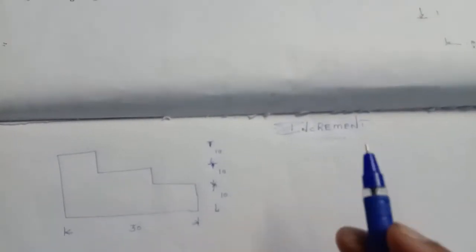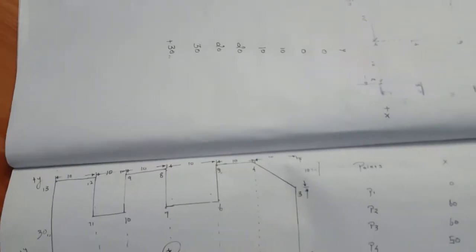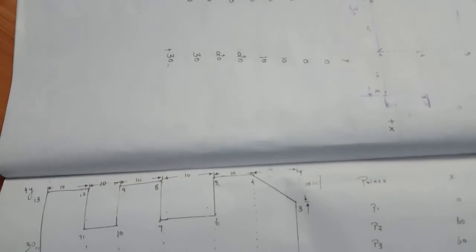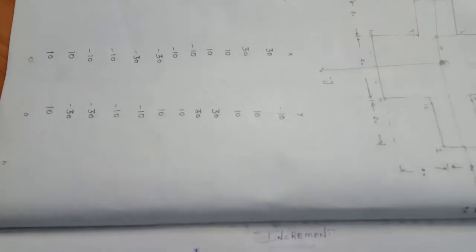Hello everyone. We will see what we are doing — incremental. We will see how we are doing incremental. We are already looking at the absolute method. We will see how we are doing it. First we will see the absolute method and incremental method. If we know this, we will be able to prove it.